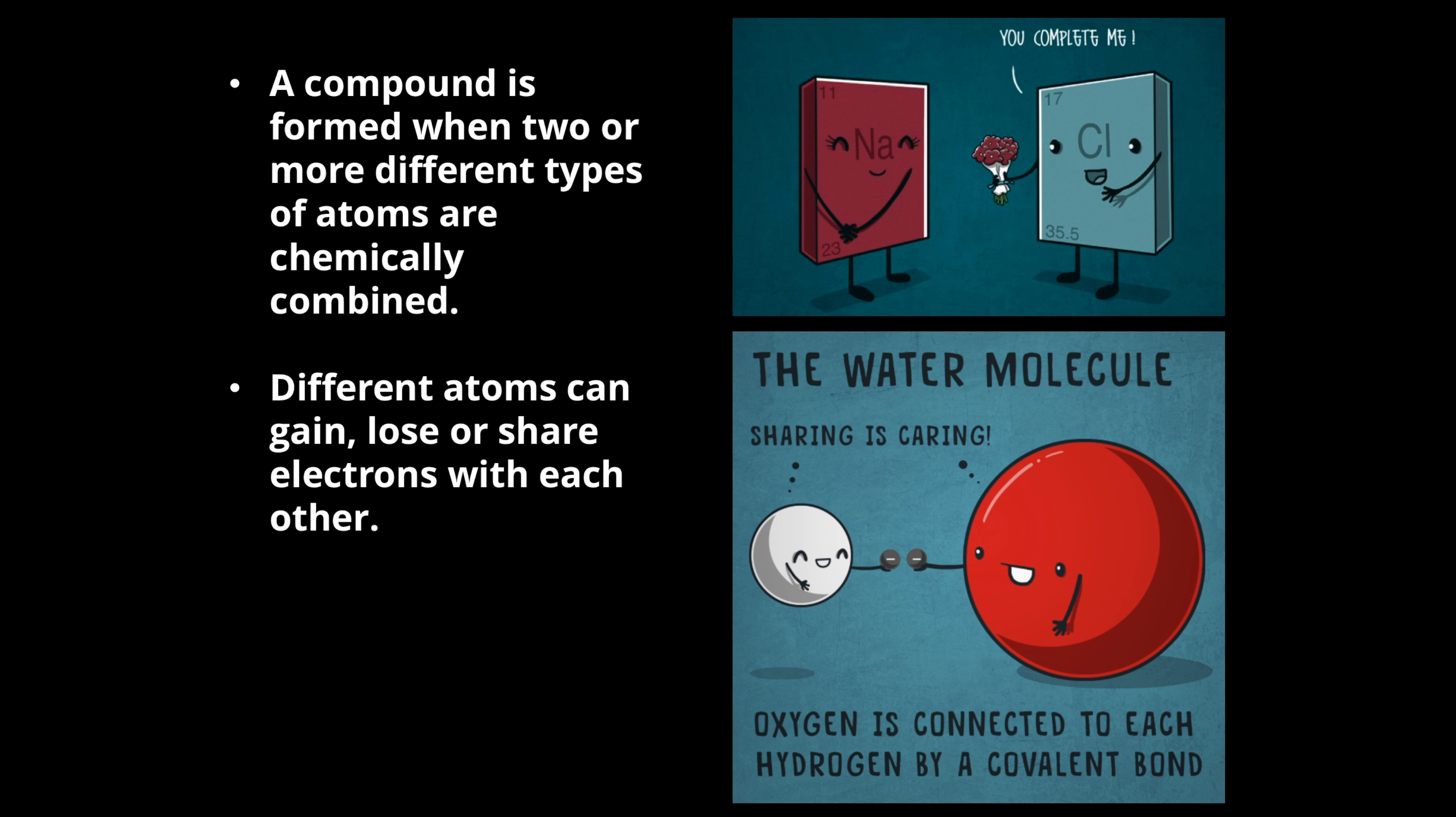In the formation of a water molecule, electrons are not transferred but rather shared between oxygen and hydrogen. Ionic bonds are usually formed between metals and non-metals, as in the case of sodium chloride, while covalent bonds are usually formed between two non-metals in the case of water.